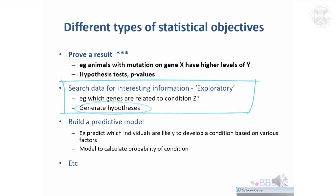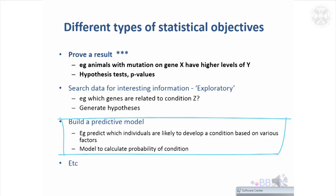Another thing you can do with data is to model it. For example, you might want to build a predictive model. If you've got a set of animals with various measurements on them, one thing you might do is try to predict whether they're likely to develop a condition in the future based on various factors you've recorded. That can be done with statistics as well — it's not about proving something, it's about developing a model that will do a prediction.